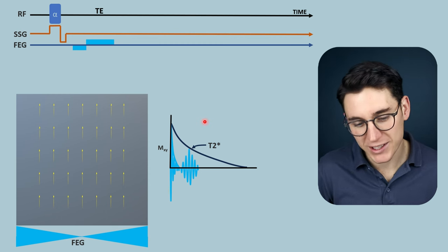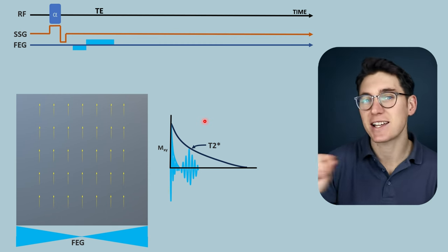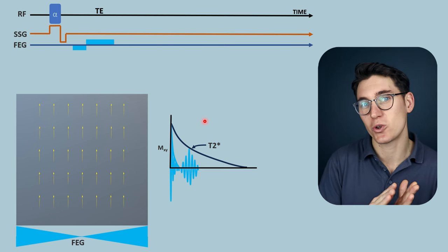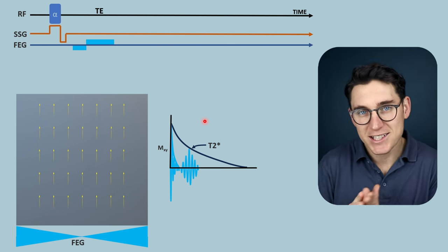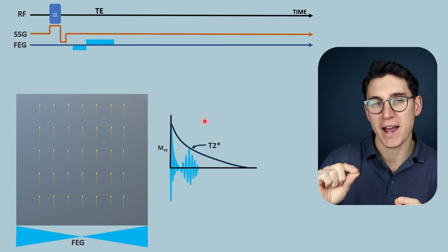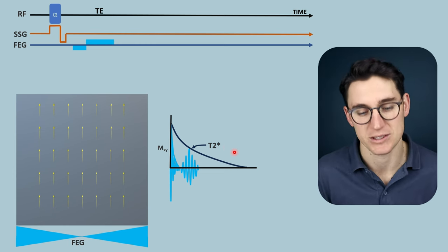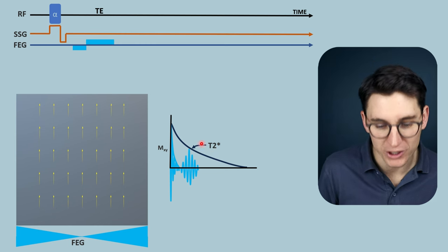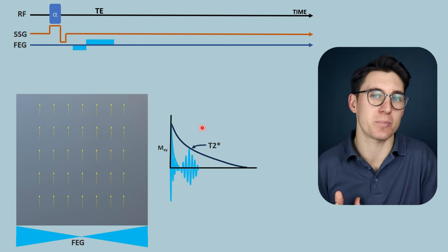Importantly, a gradient echo doesn't account for the local magnetic field inhomogeneities that we saw in spin echo imaging. Spin echo imaging recovered signal back up to T2 levels, not T2 star levels. Why then would we go about using a gradient echo over a spin echo?